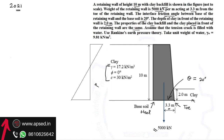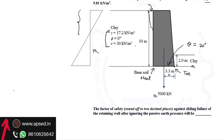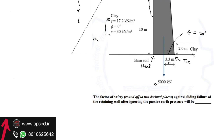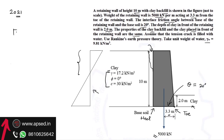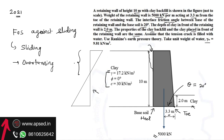Because it is a clay backfill, the earth pressure diagram has a tension zone, so there will be a tension crack, and it is given that this tension crack is filled with water. We use Rankine's earth pressure theory. The question asks for the factor of safety against sliding failure of the retaining wall, ignoring passive earth pressure. For retaining walls, two factors of safety are checked: sliding and overturning.